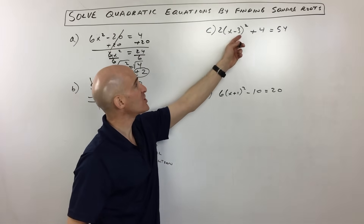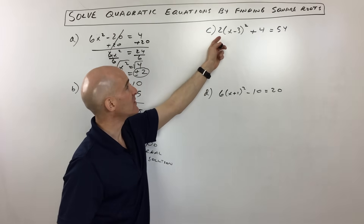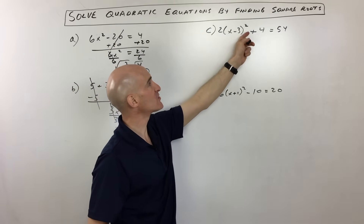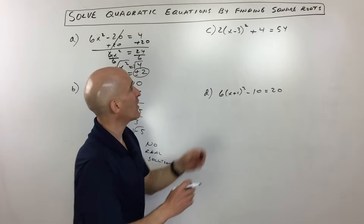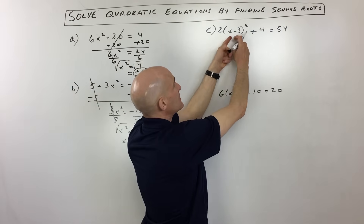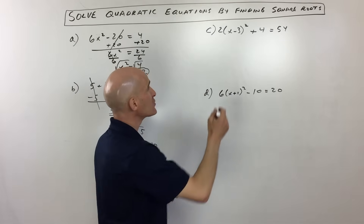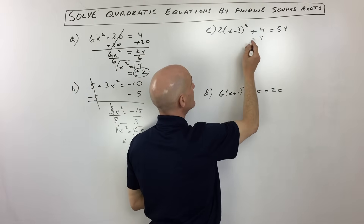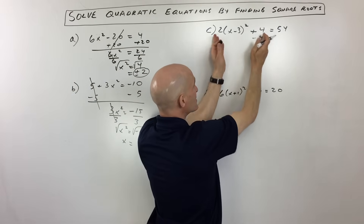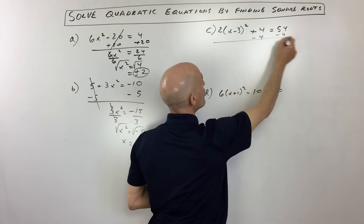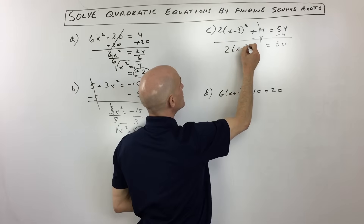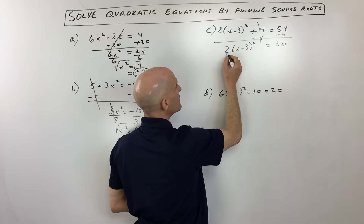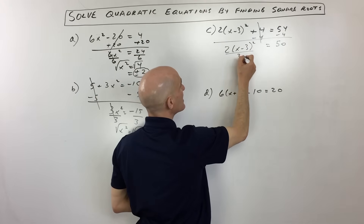Letter C now — a little bit more challenging. We've got 2 times the quantity x minus 3 squared plus 4 equals 54. Again, we want to work from the outside in towards x. So I'm going to subtract 4 — that cancels and gives us 50. Over here we have 2 times x minus 3 squared, so we then divide both sides by 2.